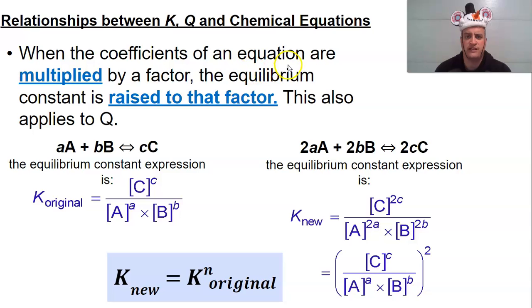So another strategy, or other things you can do, is when the coefficients of an equation are multiplied by a factor, the equilibrium constant is raised to that factor. So if we start off with an original, you get your product over your reactants. And again, we're keeping in mind that, let's say, these are all gases or all solutions.